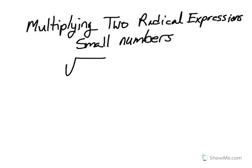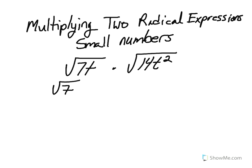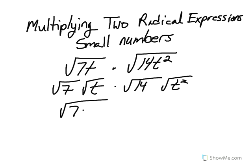For example, to multiply the square root of 7t times the square root of 14t squared, we're going to use the multiplication property of square roots to change the square root of 7t into the square root of 7 times the square root of t. We're going to change the square root of 14t squared to the square root of 14 times the square root of t squared. Now we're going to reorder this to the square root of 7 times 14, times the square root of t times t squared.